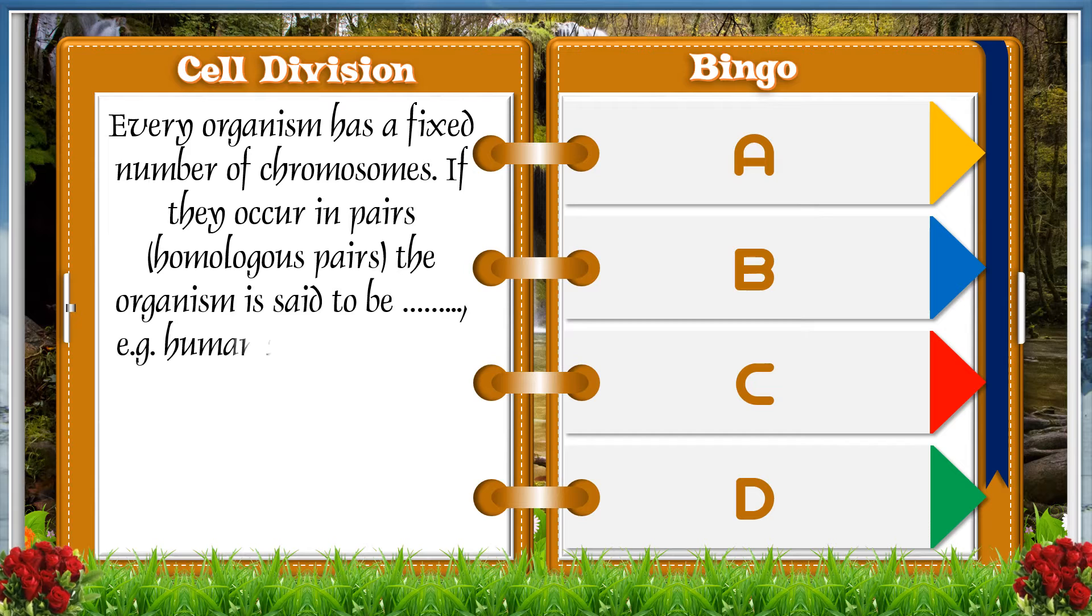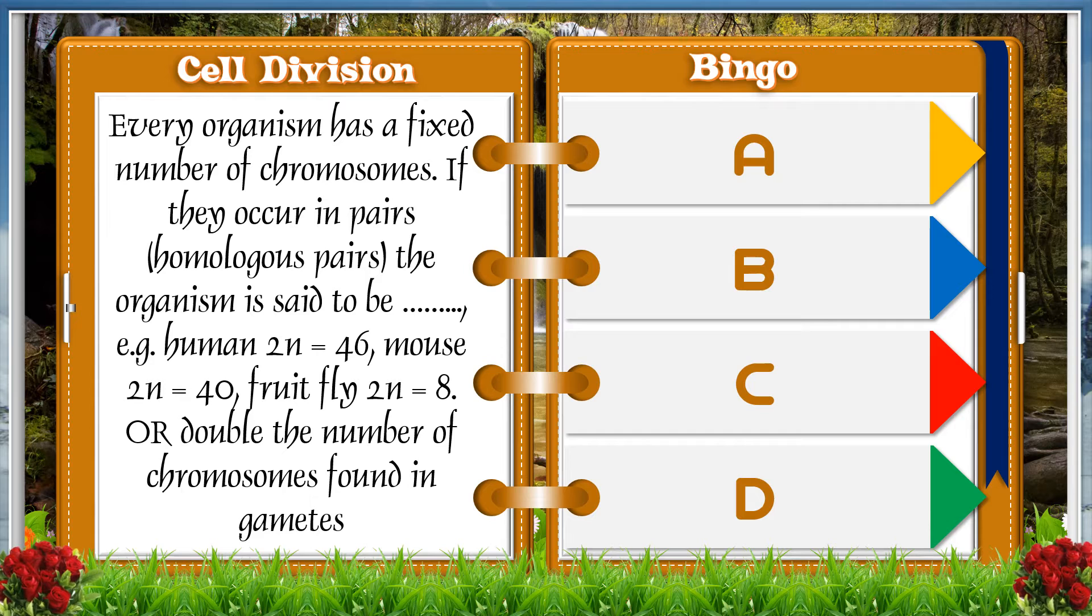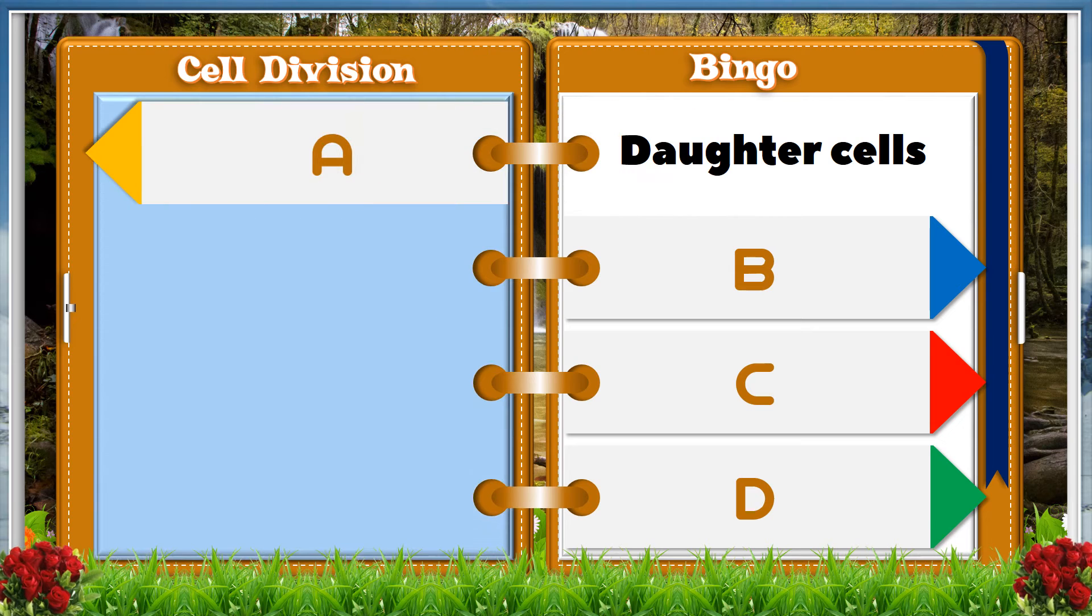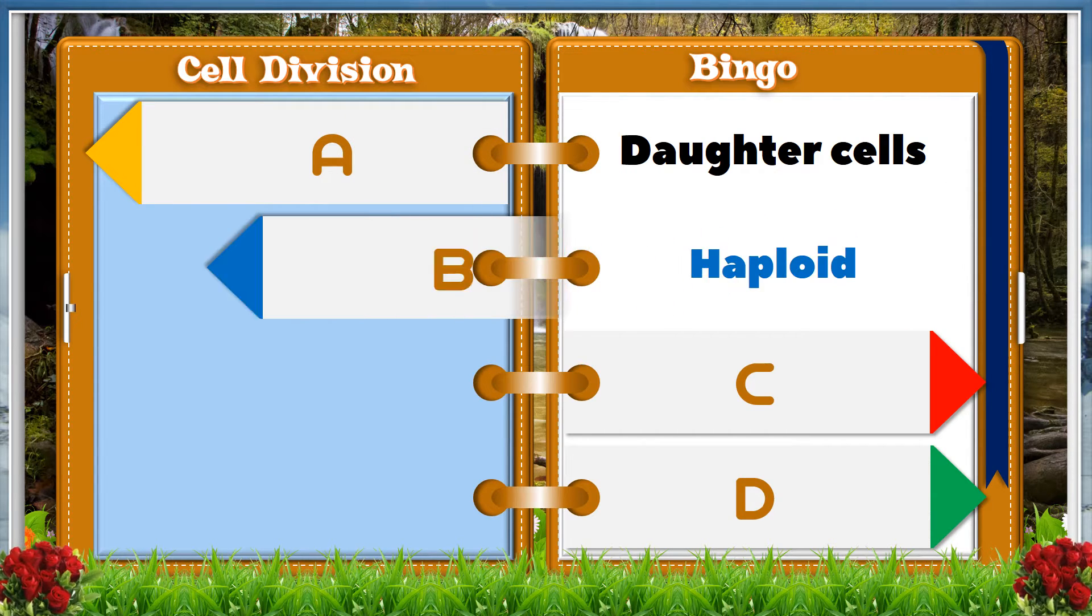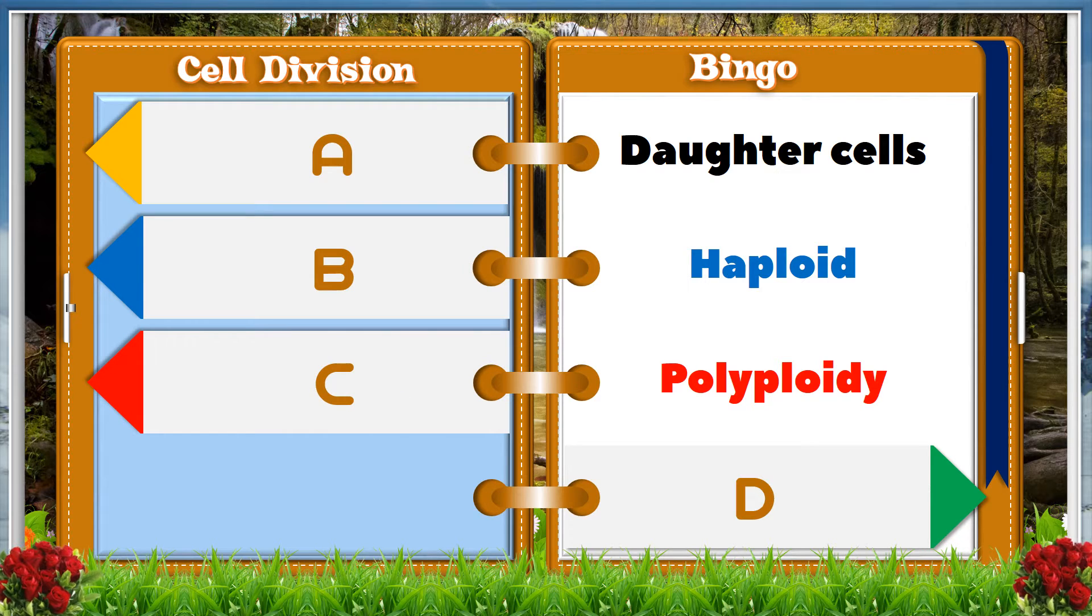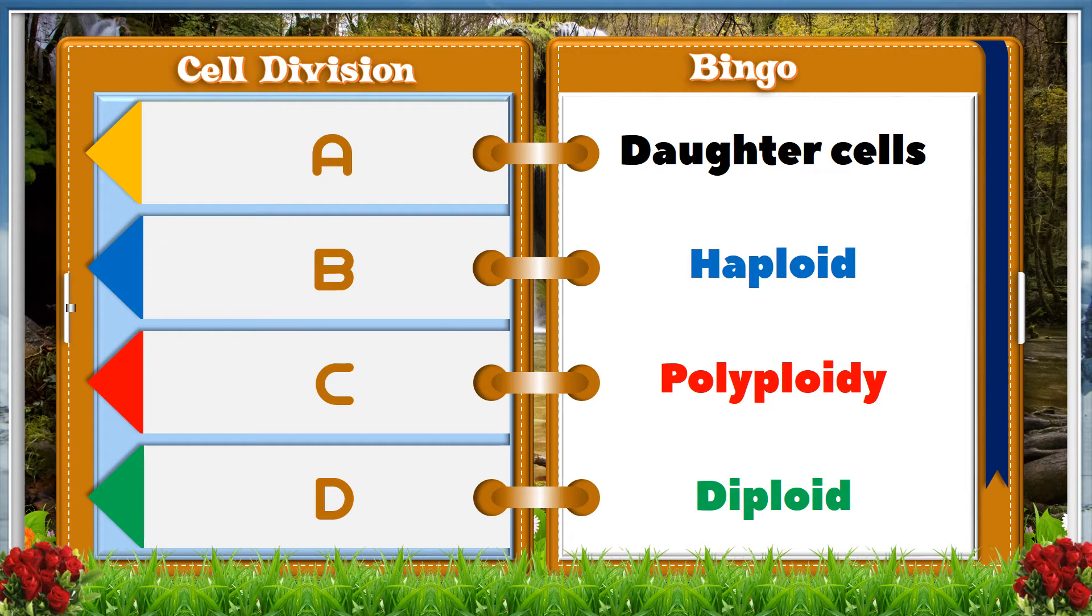Every organism has a fixed number of chromosomes. If they occur in pairs, that is homologous pairs, the organism is said to be blank. For example, human 2n is 46, mouse 2n is 40, fruit fly 2n is 8. A double the number of chromosomes found in gametes, B haploid cell, C polyploid, D diploid.